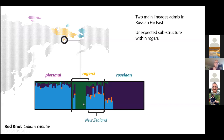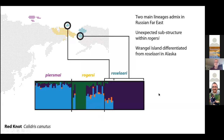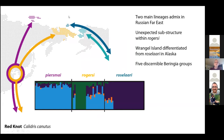In the red knot, birds from west to east seem to show a gradual admixture of a western lineage with an eastern lineage from Alaska. What really jumps out is that a new lineage was inferred within rogersi — occurring in some but not all samples from a disjunct breeding site — and it never showed up strongly in New Zealand samples compared to them. There's also structure within rogersi not being picked up in New Zealand samples.